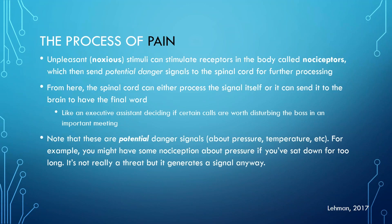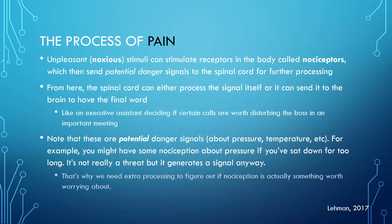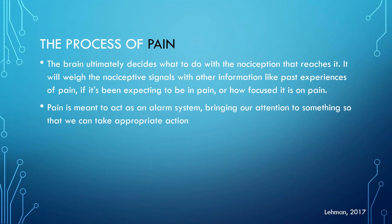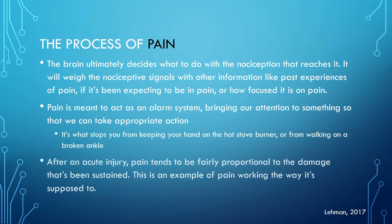The brain ultimately decides what to do with the information it receives — weighing it against past pain experiences, whether it's been expecting pain, and how focused it is on pain at that moment. Pain is really meant to act as an alarm system that brings our attention to something so we can take appropriate action. After an acute injury, pain tends to be fairly proportional to the damage sustained — this is pain working as intended. Key takeaways: nociception does not always lead to pain; pain depends on many factors.